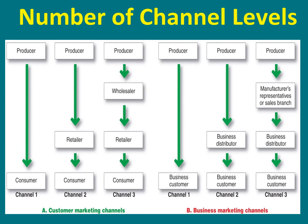Looking at consumer marketing channels: the traditional way is producer → wholesaler → retailer → consumer. A shorter way is producer → retailer → consumer. The direct way is producer → consumer. The choice depends on how much the company tries to control the distribution process, the product type, and the distribution strategy.